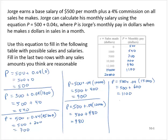And for 20,000, pay would be 500 plus 0.04 times 20,000, which would be 500 plus 800, which is 1,300.